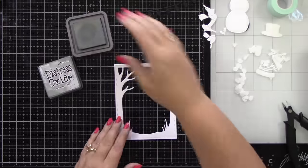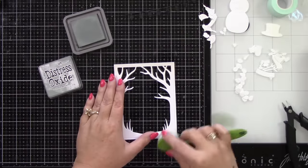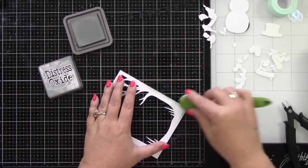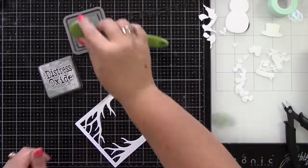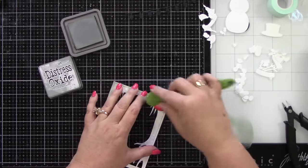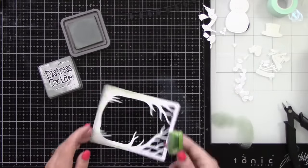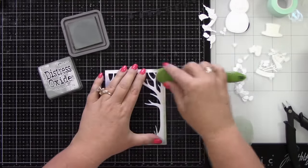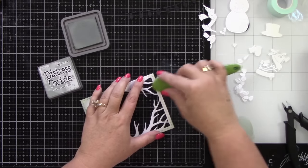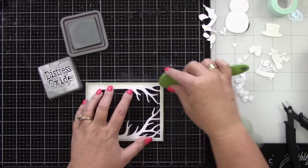So here's that Spooky Forest die I have die cut from white cardstock. I'm doing a little bit of ink blending with Iced Spruce. This color combination that I'm using are really kind of muted greens and blues, and then I will have a pop of red.